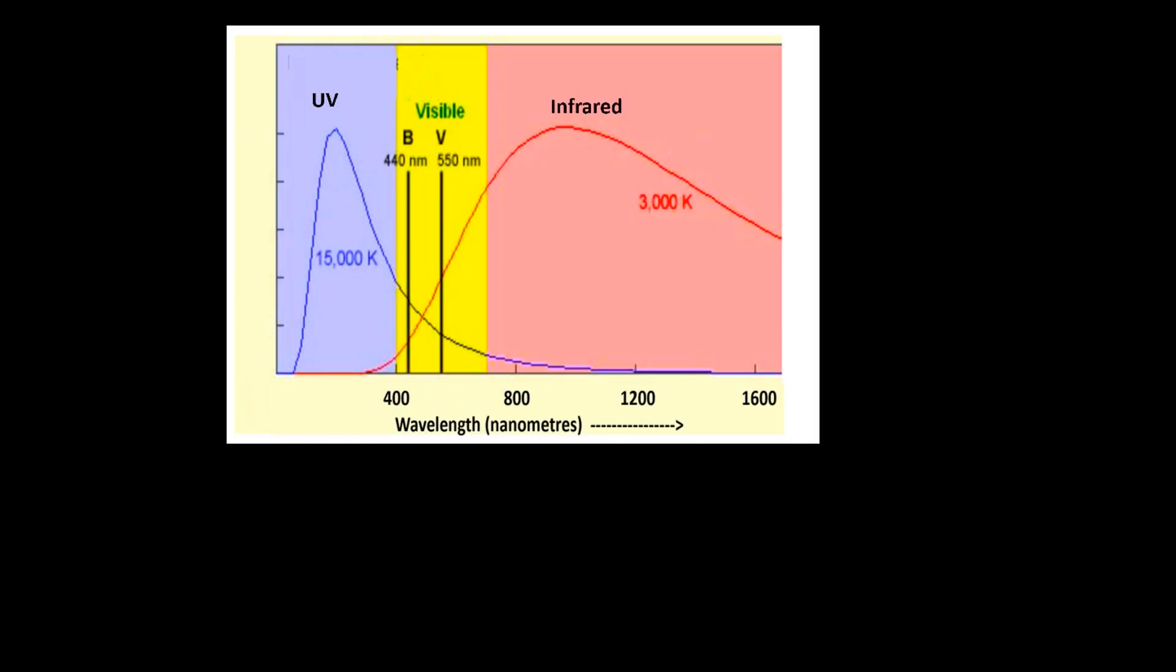The stars which are much hotter than the sun radiate most of their energy at shorter wavelengths primarily in the ultraviolet. Their visible light is emitted mainly at the violet and blue range of the spectrum. Stars which are much cooler than the sun radiate most of their energy at longer wavelengths primarily in the infrared. Their visible light is emitted mainly at the red end of the spectrum.